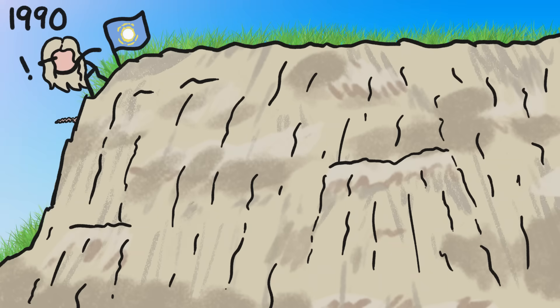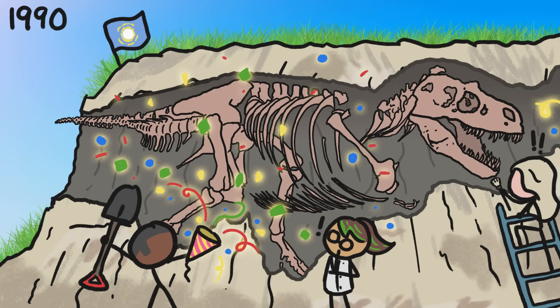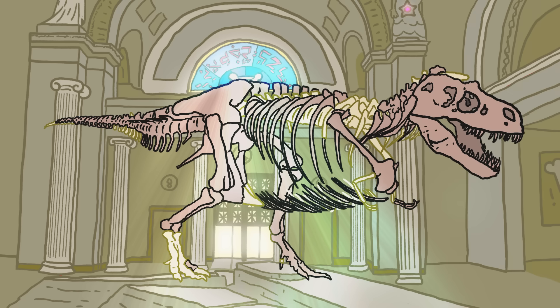In 1990, fossil collectors in South Dakota stumbled across a dinosaur that turned out to be a really big deal. Not just because it was a T-Rex, basically the most popular dino out there, or because it ended up in Chicago's famous Field Museum, but because of the number of bones it had.